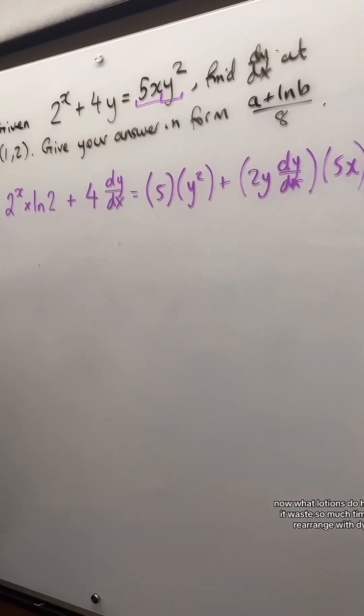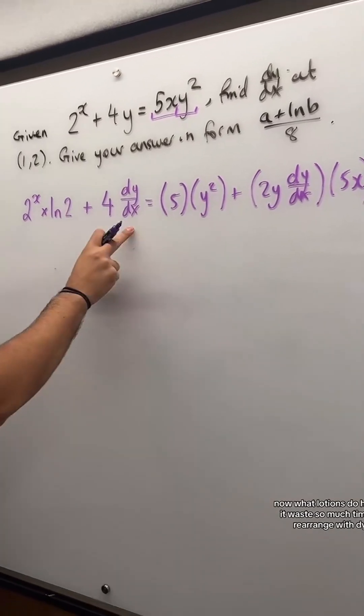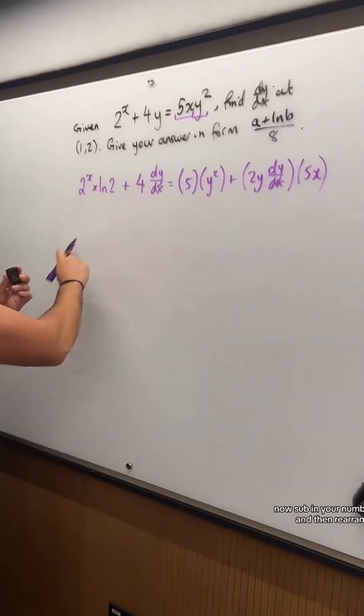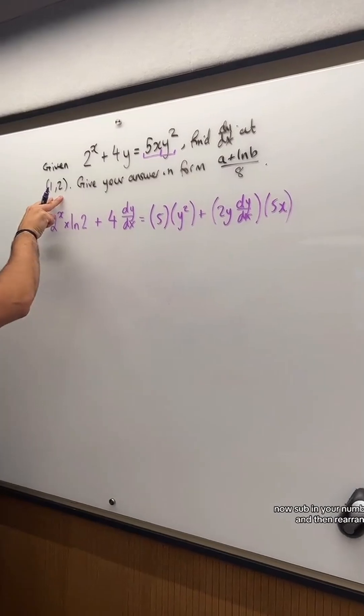what a lot of students do here, and it wastes so much time, is to rearrange for dy/dx. Don't do that now. Sub in your numbers first, and then rearrange.